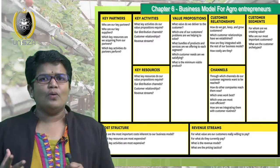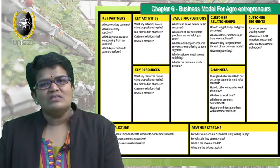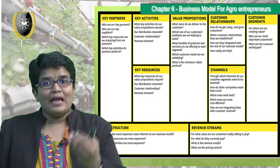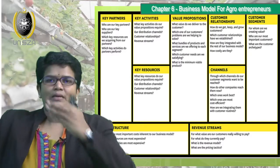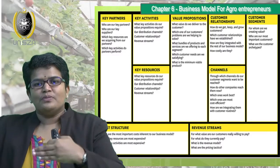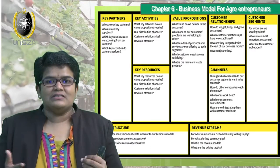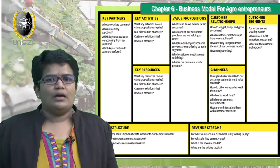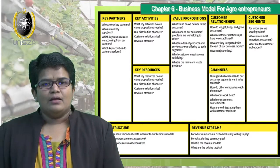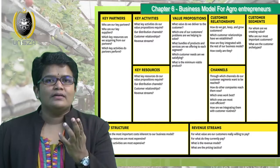Start with your customer segment — identify and understand them. Then, how are you going to create a customer relationship? You don't want your customer to come just once to your outlet. You want them to continuously return, and not only that — you want them to bring extra people: their friends, their family, their in-laws. So there needs to be a good relationship between you and the customer. Then make sure you identify your channels — what channels you are going to use to distribute your product or services.